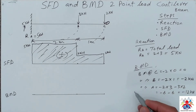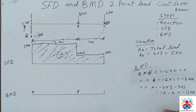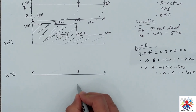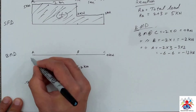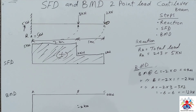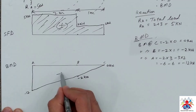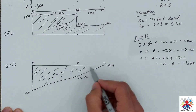Now we have to draw the diagram based on these numbers. At point C we have zero, this is point B, and this is point A. At point B we have minus 2, so that's somewhere here — zero kilonewtons at C — and at point A it is minus 12, somewhere here. Connecting these points gives us our diagram, which is in the negative zone. That's how you can draw a bending moment diagram for this type of beam.